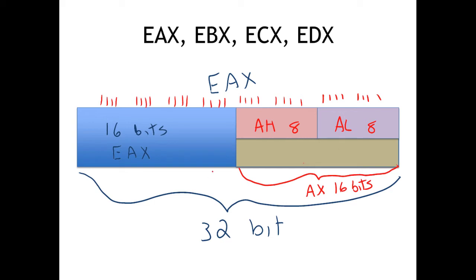So to summarize: EAX gives us the whole register — all 32 bits. AX gives us the lower 16 bits. And AL and AH give us the upper and lower eight bits of AX.